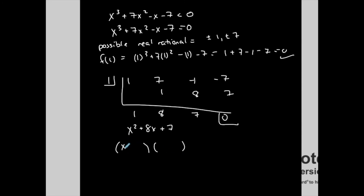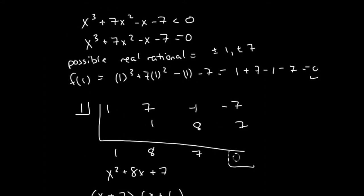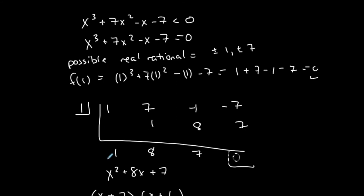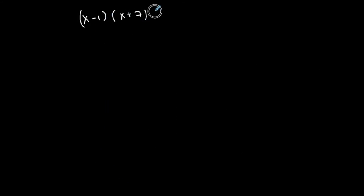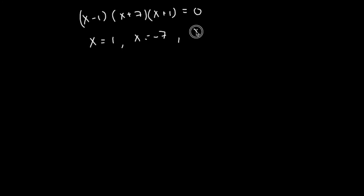x² + 8x + 7 factors as (x + 7)(x + 1). So the fully factored form is (x − 1)(x + 7)(x + 1). Setting each factor equal to zero gives solutions x = 1, x = −7, and x = −1 as the boundary points.